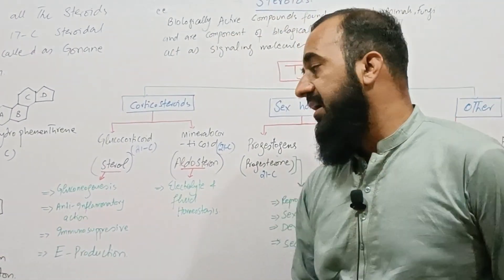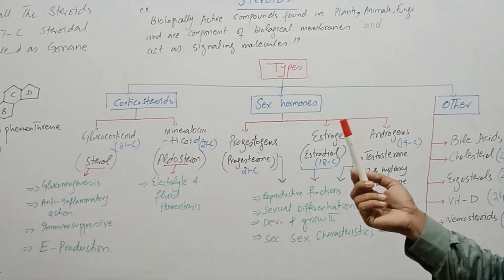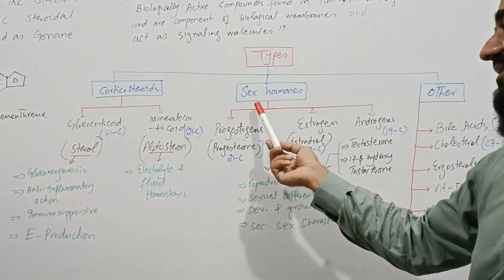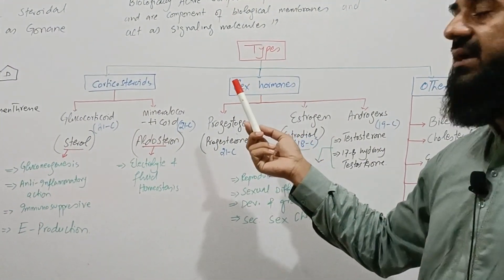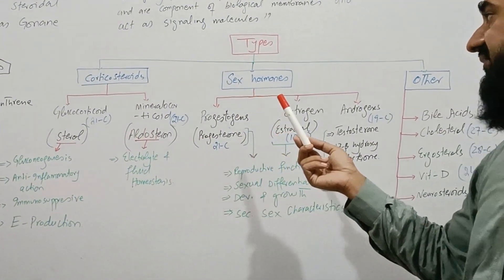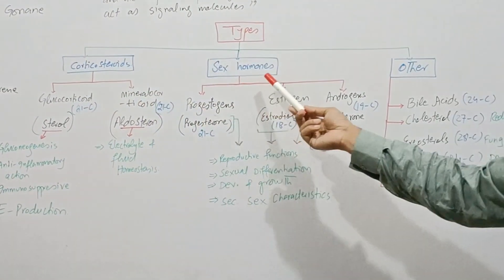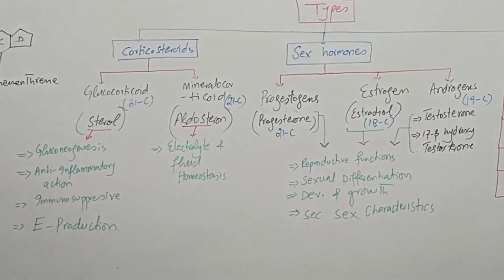If you see the types, there are two principal types of steroids: corticosteroids and sex hormones. On the basis of their function, I classify the steroids into three classes: corticosteroids, sex hormones, and other steroids.